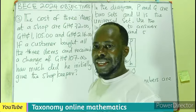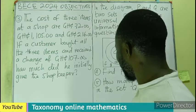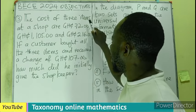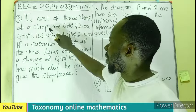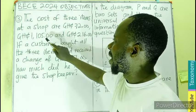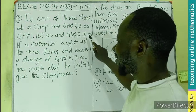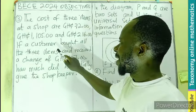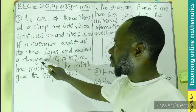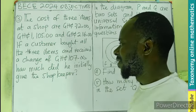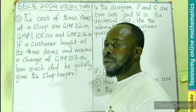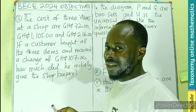Hello, let's look at question 3. The cost of three items at a shop are GH¢72.00, GH¢1,105.00, and GH¢216.00. If a customer bought all three items and received a change of GH¢107.00, how much did he initially give to the shopkeeper?